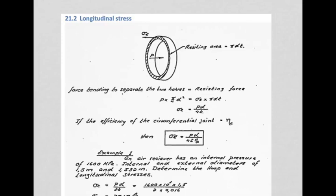At 90 degrees to all of that we have longitudinal stress, where we consider the cross-sectional area. The internal pressure acts on a projected area and is resisted by an area of pi·d·t — pi·d being the circumference multiplied by the material thickness. Pressure times projected area (pi/4 · d²) equals the resisting force, and we end up with pd over 4t.